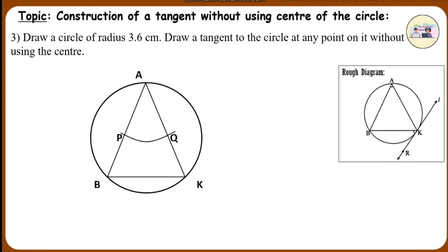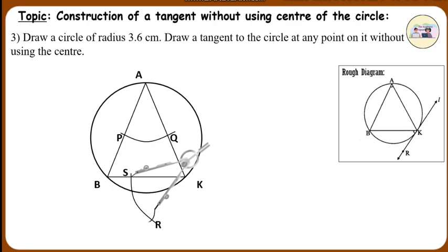Using the same radius and center A, draw an arc intersecting chord BK at point S. Taking the radius equal to the distance PQ and keeping the pointer of the compass at point S, draw an arc intersecting the arc drawn in the previous step. Let R be the point of intersection of these arcs. Draw line KR. Line KR is the required tangent to the circle.